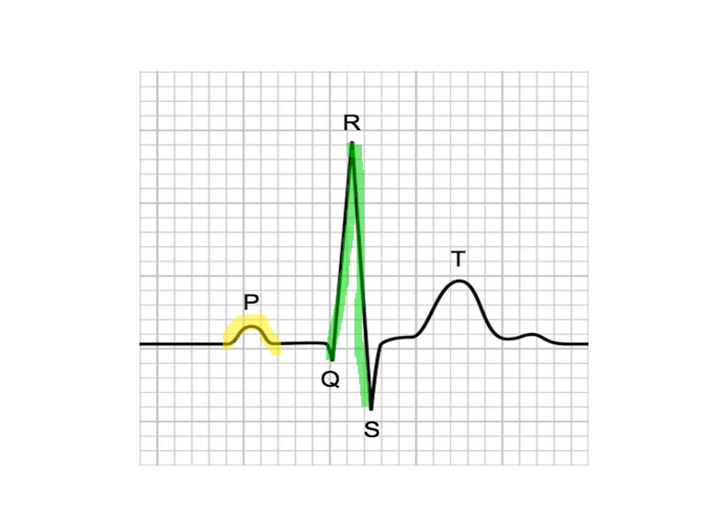After the P wave, there is the QRS complex, which represents ventricular depolarization. Then the T wave represents ventricular repolarization — this is when electricity is reversing and the ventricles are getting the chance to relax. We cannot see atrial repolarization because it is hidden within the QRS complex.